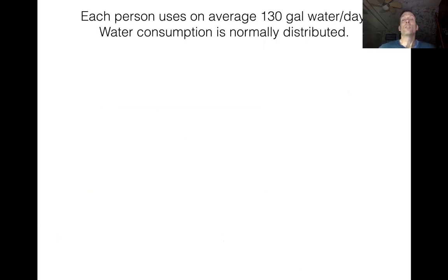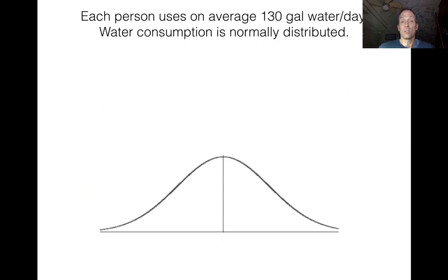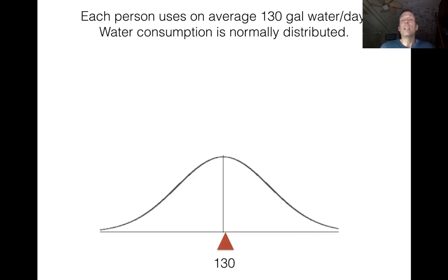If the average person uses about 130 gallons of water a day — consuming, showering, washing the car, brushing teeth, drinking water — the average is about 130 gallons a day. If water consumption is normally distributed, we start with a normal distribution sketch placing 130 gallons in the center. If we go into the population and take samples of size 40 and calculate the average of each sample, we don't expect the sample average to be exactly equal to the population average, because of something called sampling error.